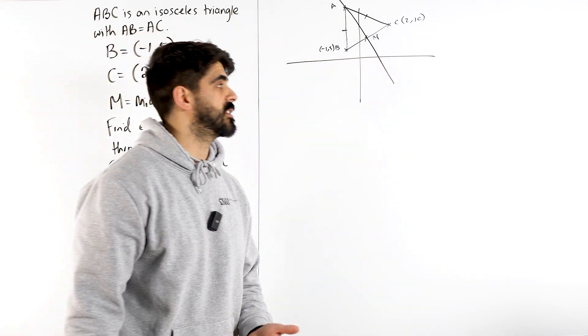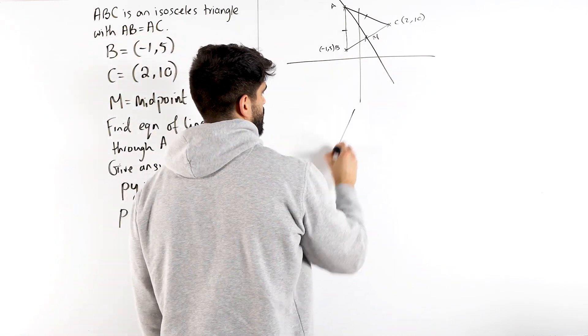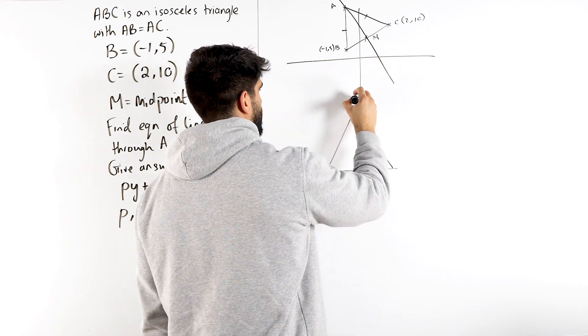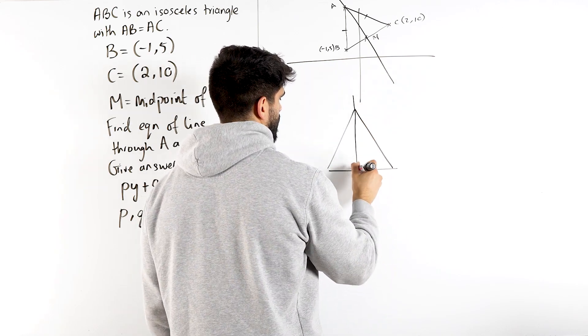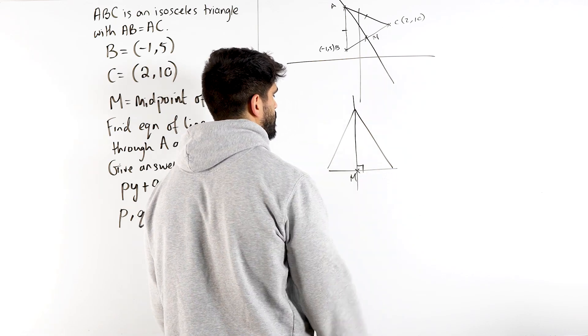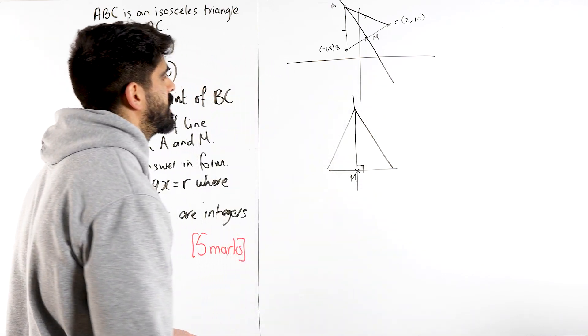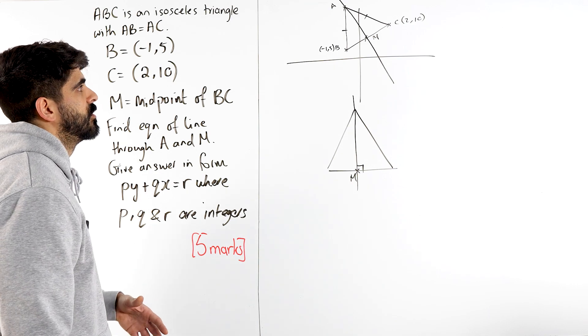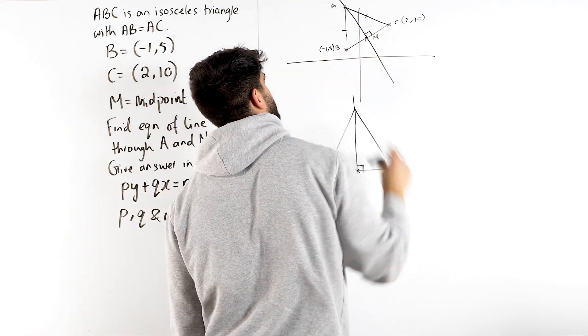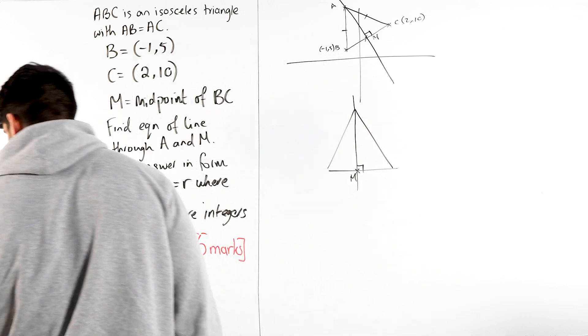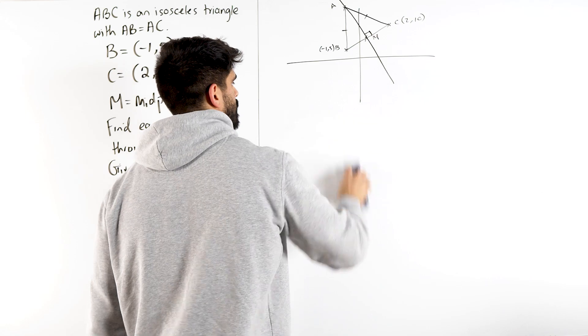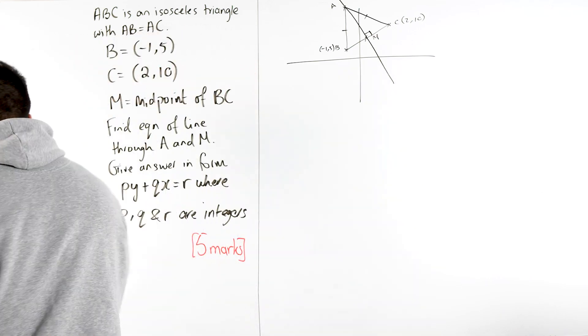Now there's a property here you guys need to be familiar with. If I do an isosceles triangle like this so it's upright, if I draw a line straight down where this is the middle, what do you notice? 90 degrees. So this question here is just to do with perpendicular lines. So this is a perpendicular lines question.